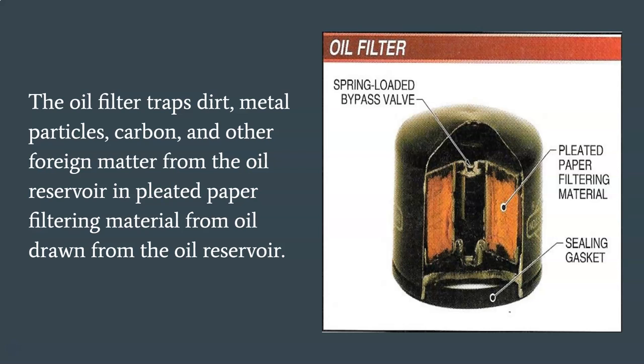The oil filter traps dirt, metal particles, carbon, and other foreign matter from the oil drawn from the oil reservoir using a pleated paper filtering material. Pressure filtration systems are used on engines where it is desirable to filter the oil. The primary function of the gerotor oil pump is to move oil from the oil reservoir through the oil filter and return it to the oil reservoir. A rubber sealing gasket provides a positive seal to prevent leakage. A spring-loaded bypass valve opens if the oil cannot pass through a clogged filter, allowing oil to continue to be routed through lubrication passages.